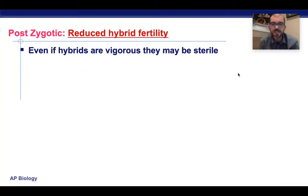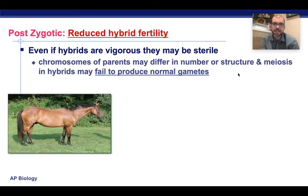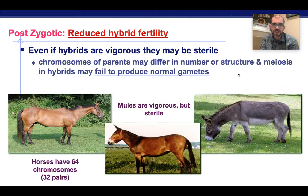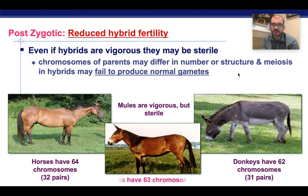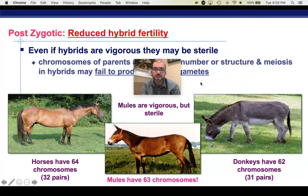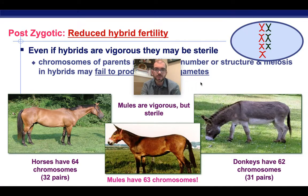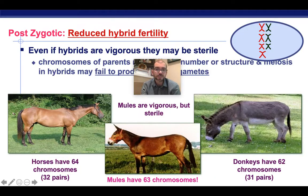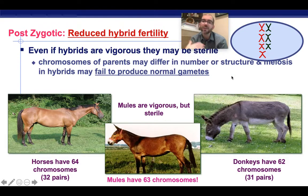Next is reduced hybrid fertility. This is when there is an offspring that can live a long, happy life, but it's unable to make offspring of its own — it's infertile. The classic example is a horse and a donkey producing a mule. Mules can live long, healthy lives, but the horse has 64 chromosomes and the donkey has 62, giving the mule an odd number. With an odd number of chromosomes, meiosis is no longer possible — you can't make viable sperm or egg. This is also true for the zorse, the tigon, and the liger, which is why you don't see many of them.